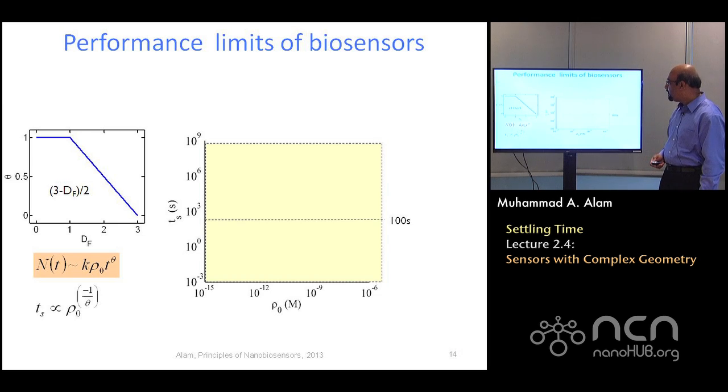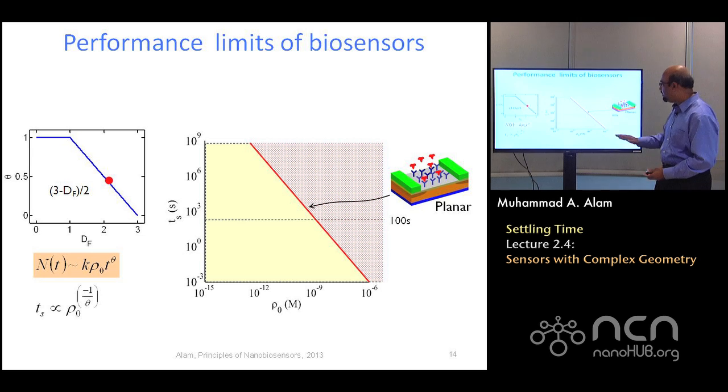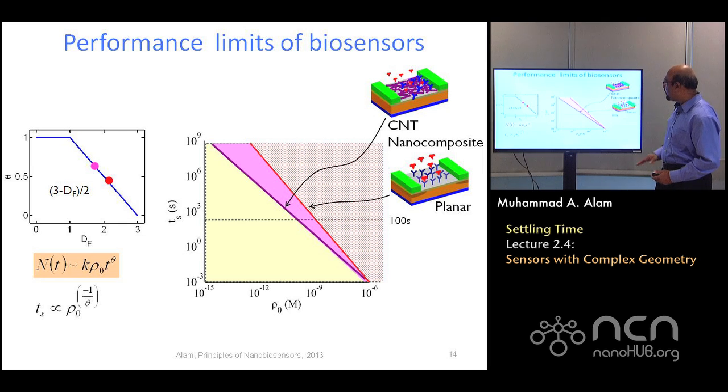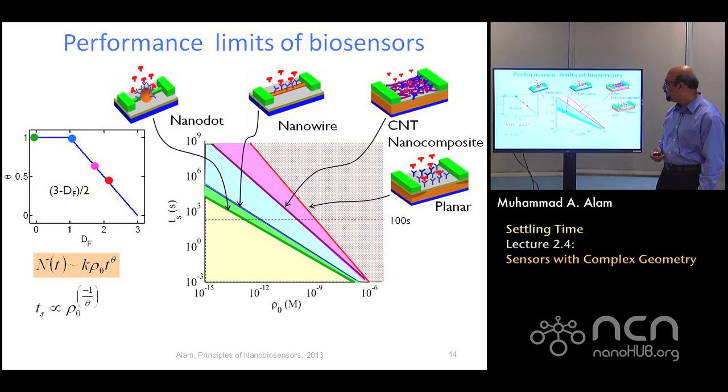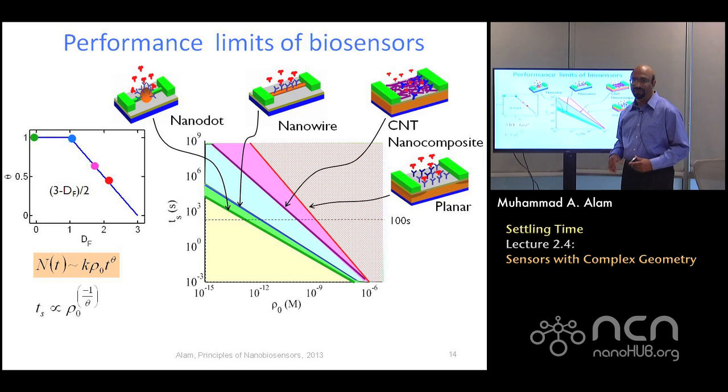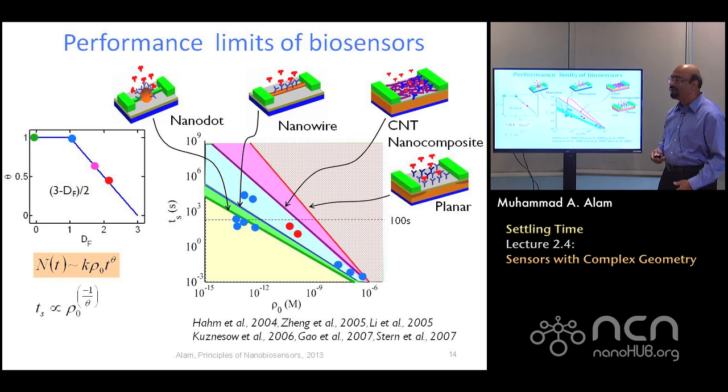So here is the summary then. The summary is that in a planar sensor, we have a certain response that goes as 1 over ρ². For a nano-composite network, we have a response which is (3 - df)/2, and the df is whatever the fractal dimension of this sensor is. For a nanowire sensor, df is 1, and so here, we have a t to the power 1 response, or it goes as 1 over ρ in terms of density, and the nano-dot sensor is not significantly different, as I have mentioned before. And if you look at experiments from wide variety of groups, you will see essentially these strains are followed.